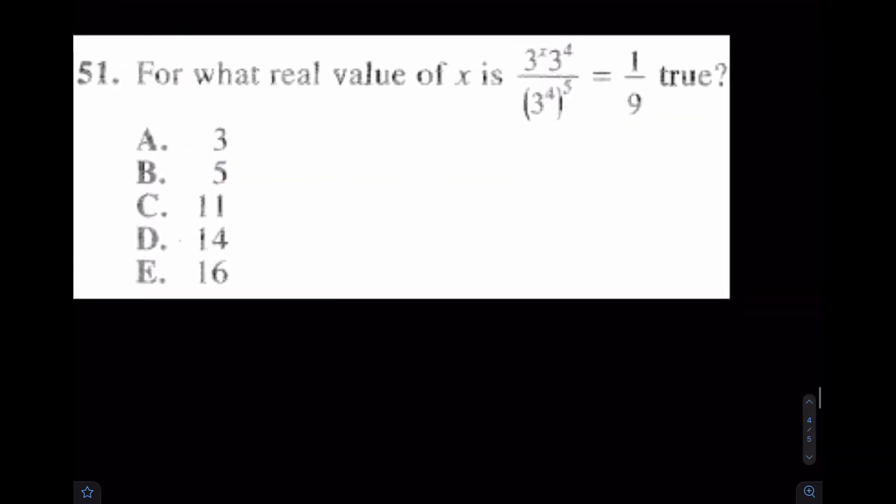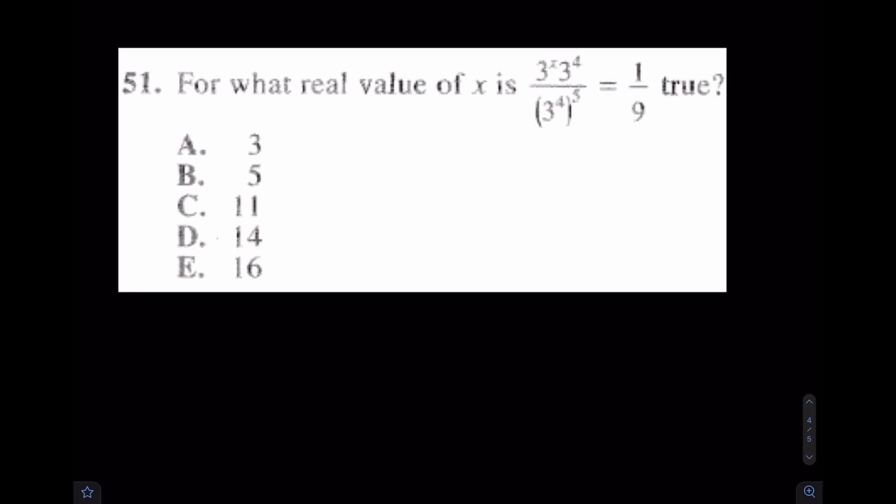Last question of the day is 51. How would I do a question like this? This one is actually kind of tough. Well, first of all, through multiplication here, you add. So you have 3 to the x plus 4 all over power of power, which is 3 to the 20th, equal to... Oh, what is 1 9th? 1 9th? That's actually 3 to the negative 2. That's a skill called disguise. I explained that in one of my other exponent videos. Again, what is 1 9th? It's not really 1 9th. I think it's actually 3 to the negative 2.